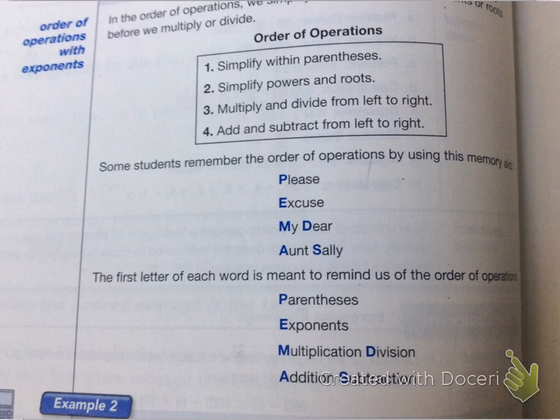So the second part is order of operations. So here we have how to do the order of operations. So first, simplify in parentheses, second, we do powers and roots, three, we multiply and divide left to right, and four, we add and subtract from left to right.